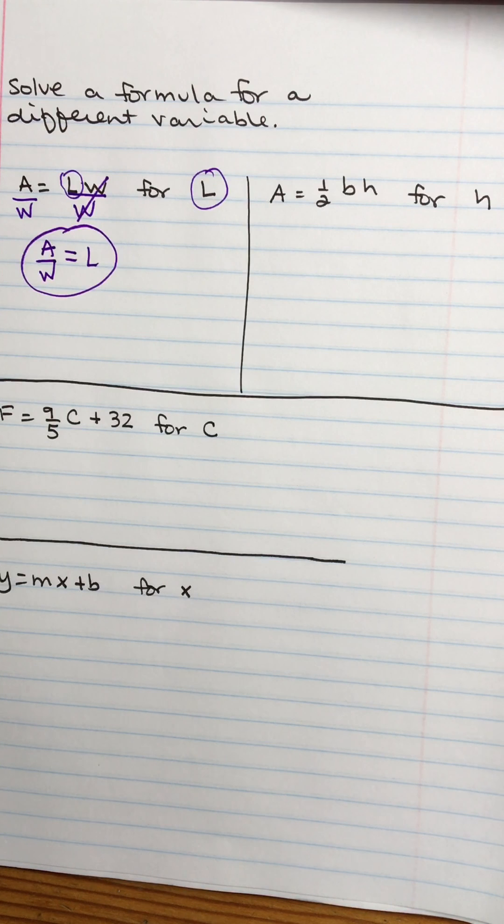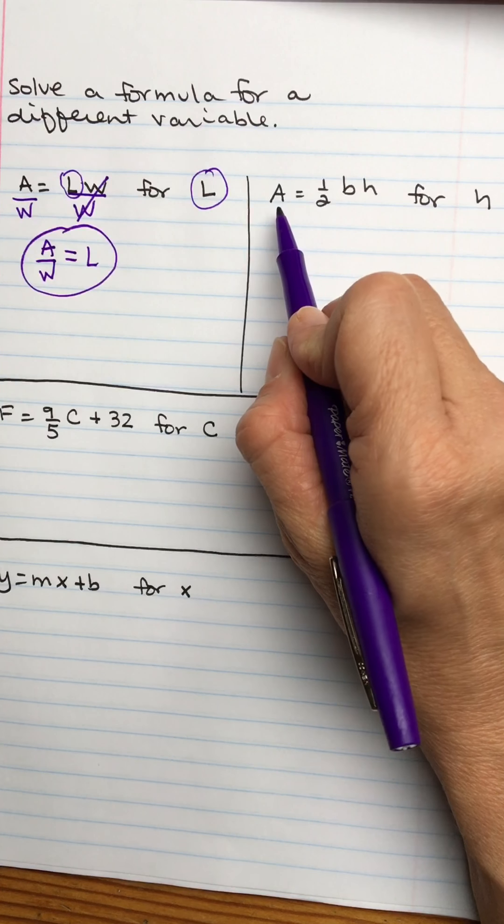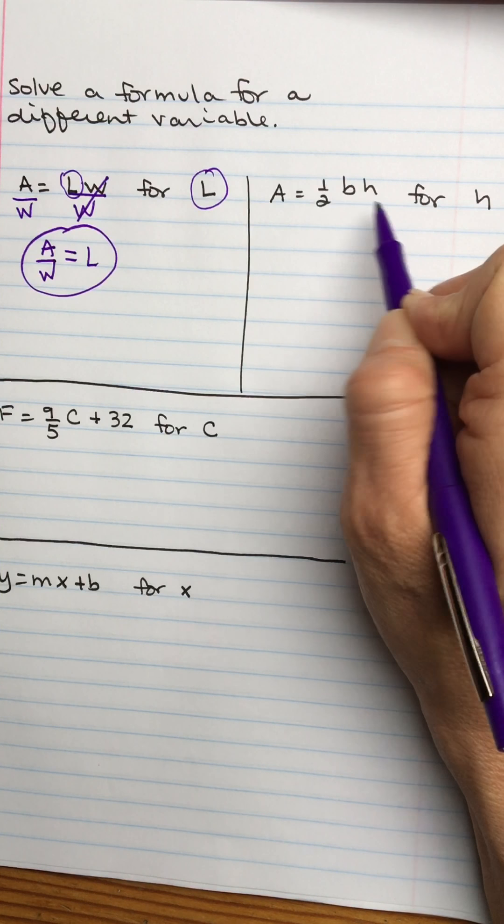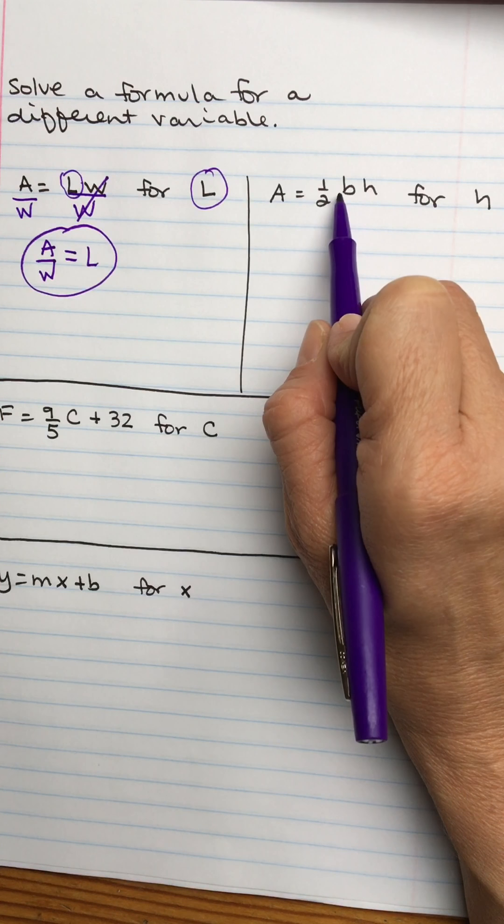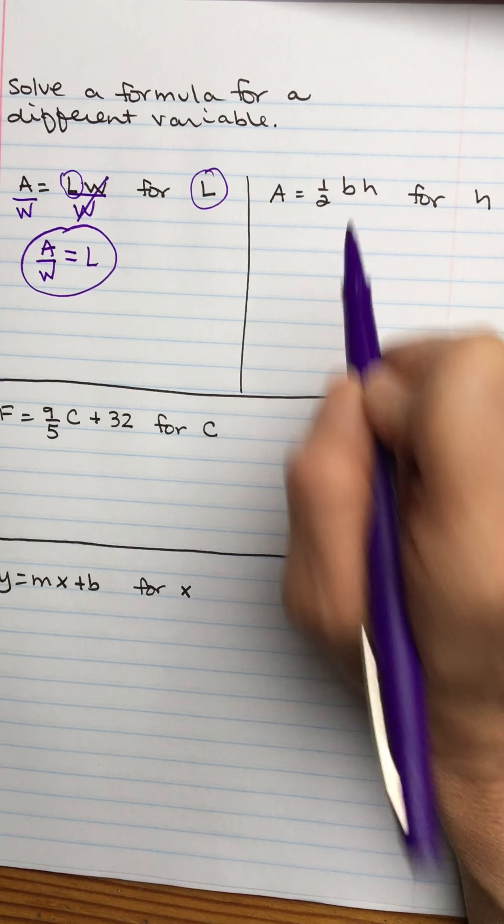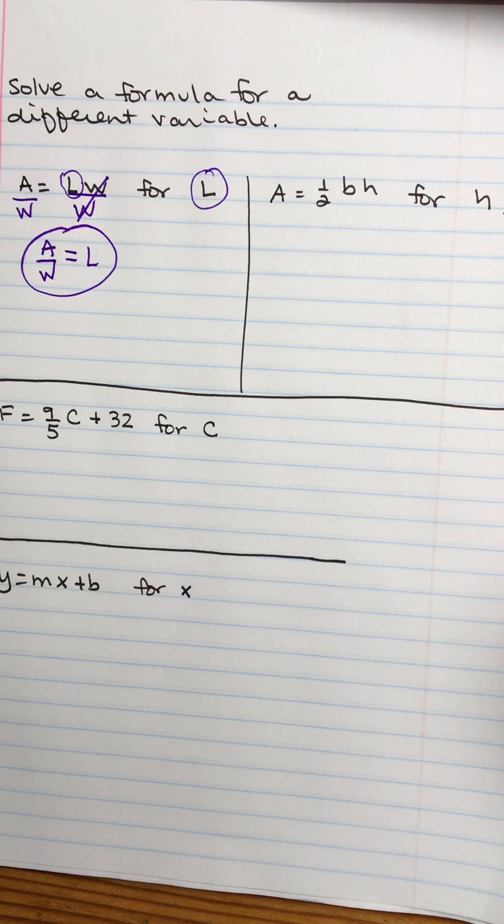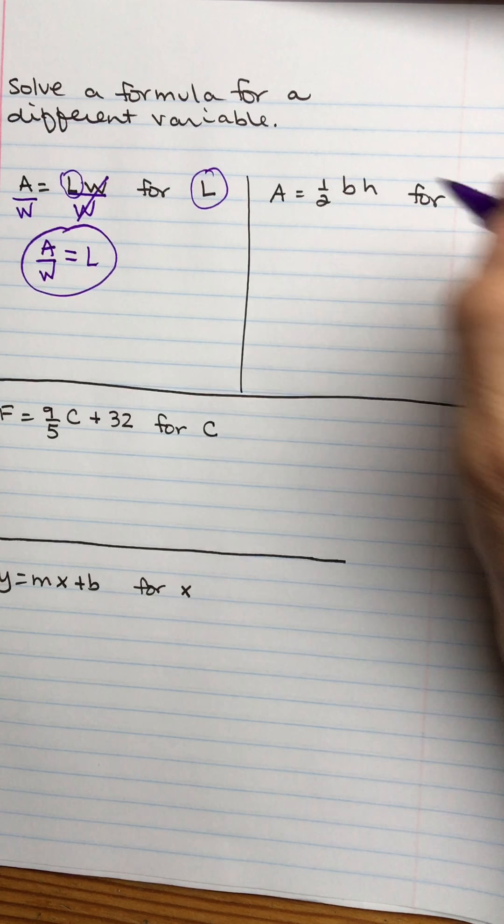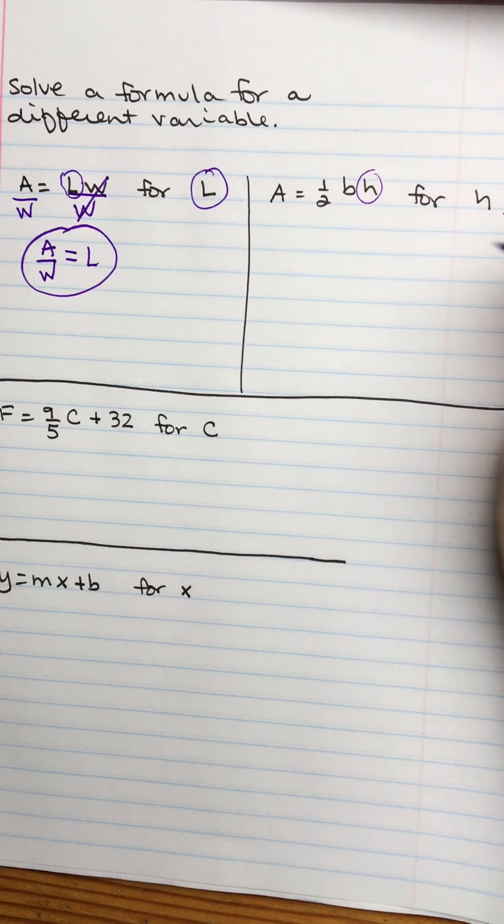You want to look how the different parts are attached to the letter that you're looking for. So let's do the next one. This is the formula for the area of a triangle. So area equals one half times base times height. And let's say we wanted to solve for the height. So we want to get the H all by itself.